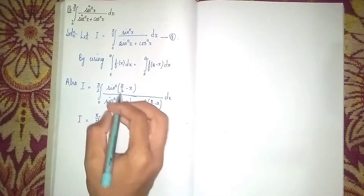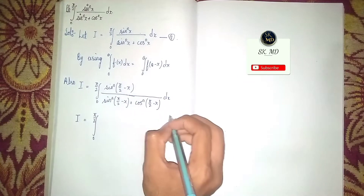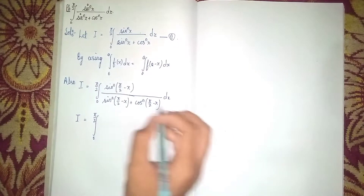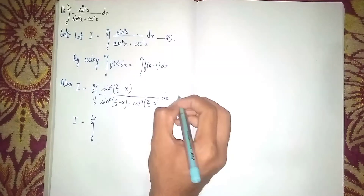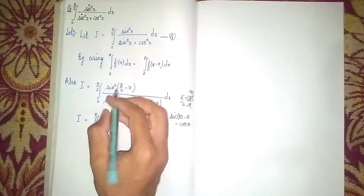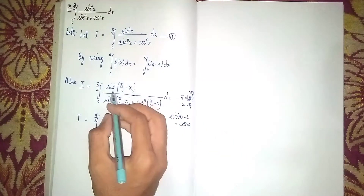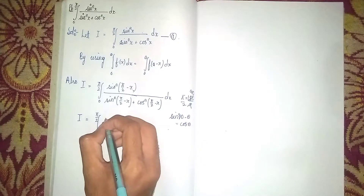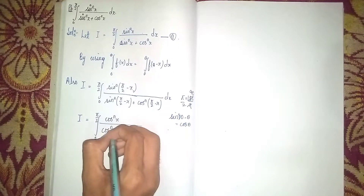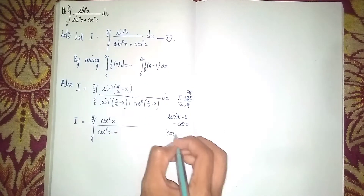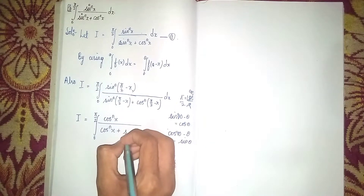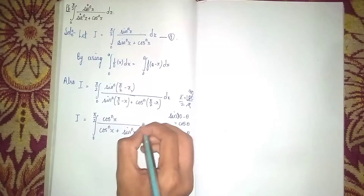Now we use the identity: sin(90° − θ) = cos θ. Since π/2 means 90°, sin(π/2 − x) = cos x. So in the numerator we get cos^n(x). Also, cos(90° − θ) = sin θ, so cos(π/2 − x) = sin x. Therefore I = ∫₀^(π/2) cos^n(x) / (cos^n(x) + sin^n(x)) dx. Take this as equation 2.